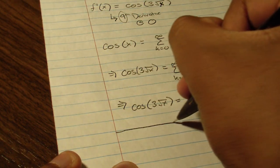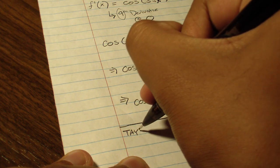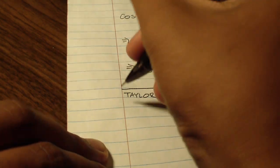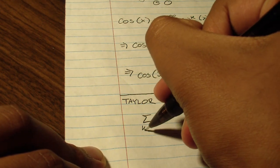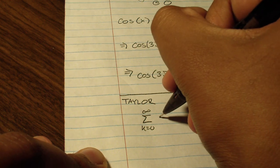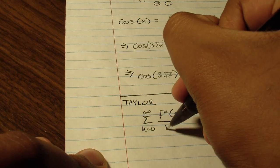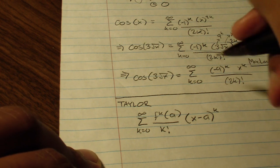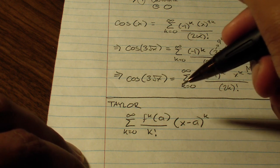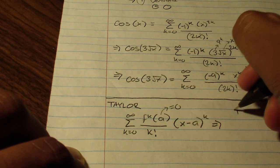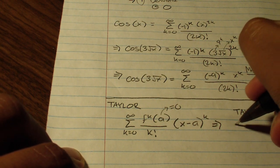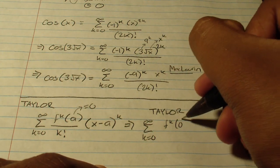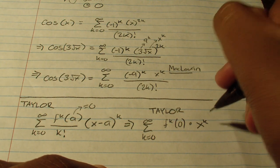Now let's move away from the Maclaurin series and go to our Taylor series representation. Since we used the Taylor series to derive our Maclaurin series, we know the Taylor series representation will be equal to the Maclaurin series representation. The general form for a Taylor series is the sum from k equals 0 to infinity of the kth derivative at a, over k factorial, multiplied by x minus a to the k. But since the Maclaurin series is centered at 0, our a value equals 0. So our Taylor representation is the sum from k equals 0 to infinity of the kth derivative at 0 times x to the k, all over k factorial.